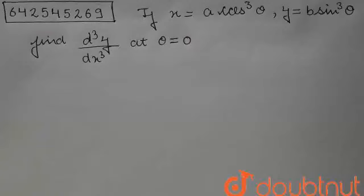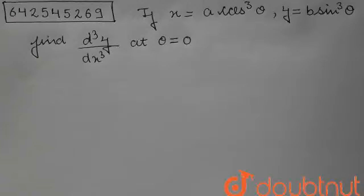So students, today's question is: if x is equal to a cos cube theta, y is equal to b sin cube theta, find d cube y upon dx cube at theta is equal to 0.